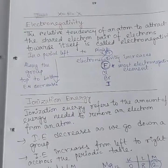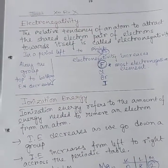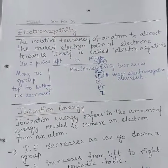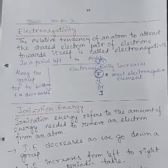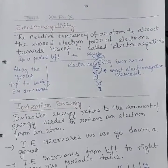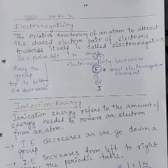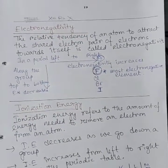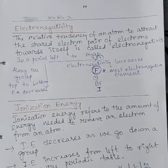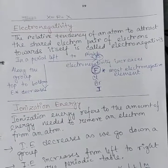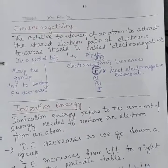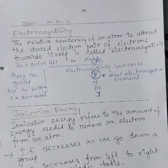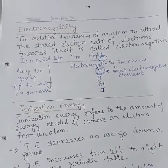Electronegativity is the relative tendency of an atom to attract the shared pair of electrons towards itself. Fluorine is the most electronegative element in the periodic table. Along a period, from left to right, electronegativity increases. Along a group, from top to bottom, electronegativity decreases.